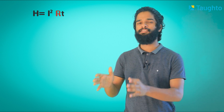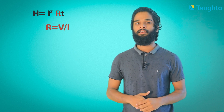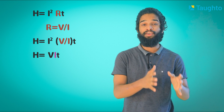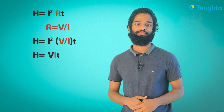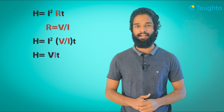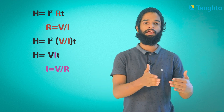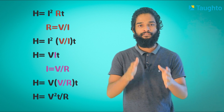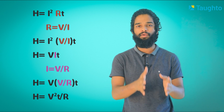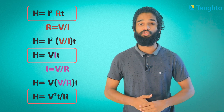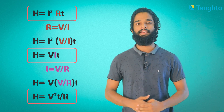Let's look at the equation: H is equal to I squared R T. We say R is equal to V by I — one relation. Substituting this relation into the equation, we have H is equal to V I T. The first relation is I is equal to V by R. We substitute in Joule's law and we have the equation: H is equal to V squared T by R.